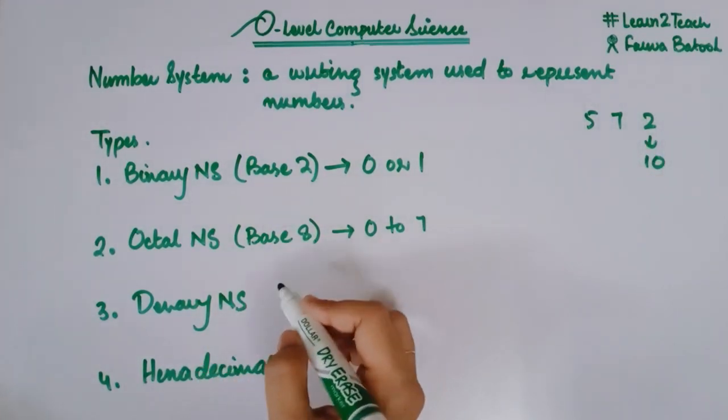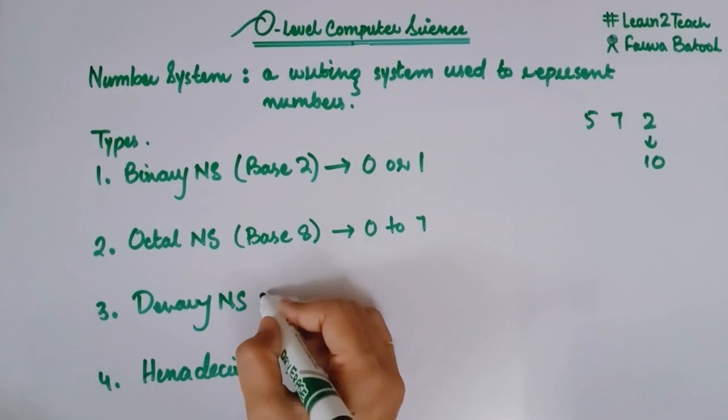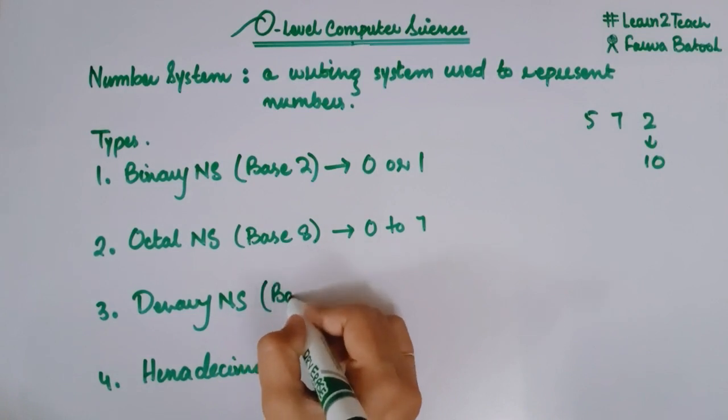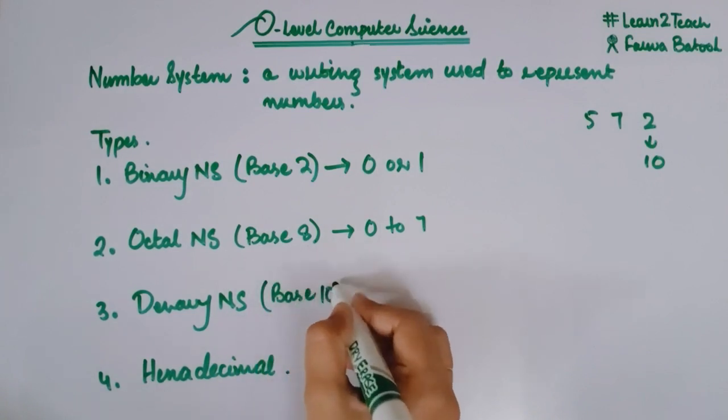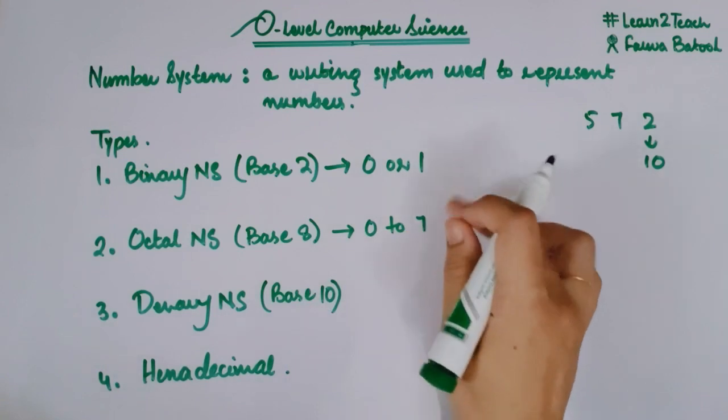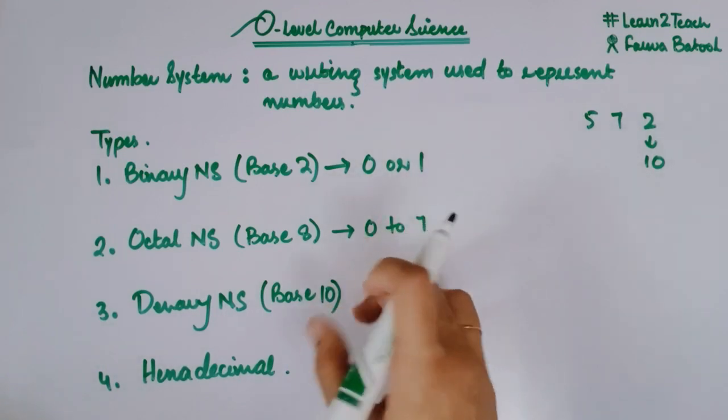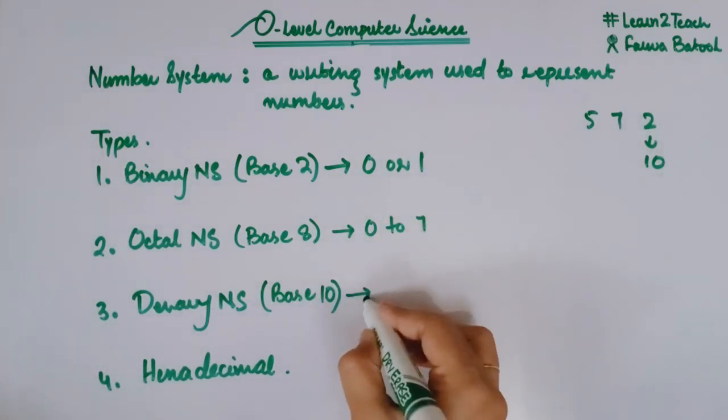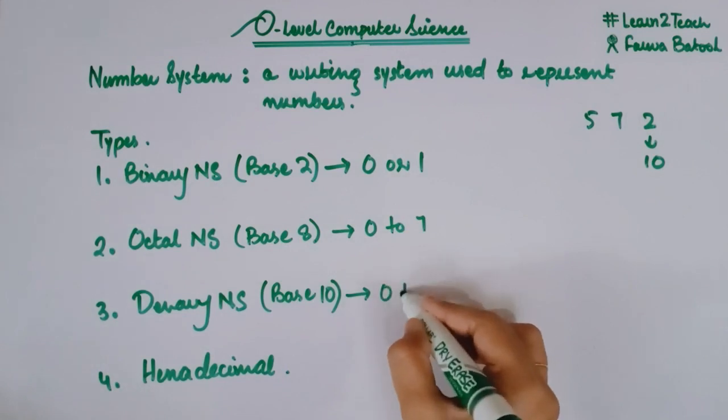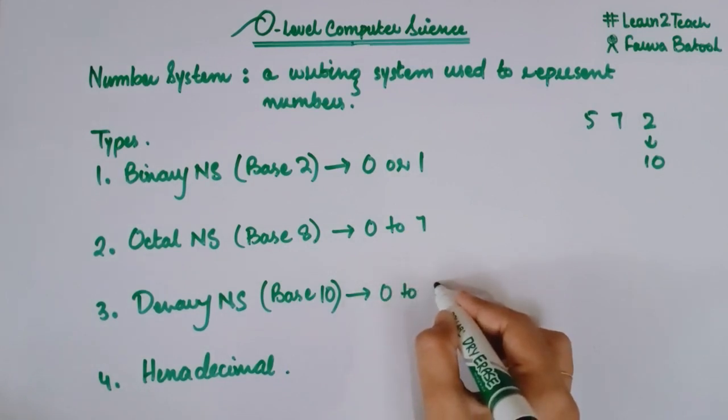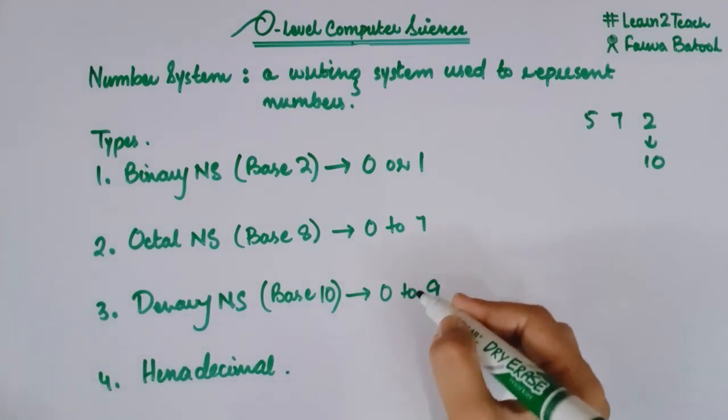Now, the third one is denary or decimal number system. This is also known as base 10. Why? Because similarly as the octal, as the binary, similarly here I am going to have ten digits. And these are from zero to nine in order to represent any number.